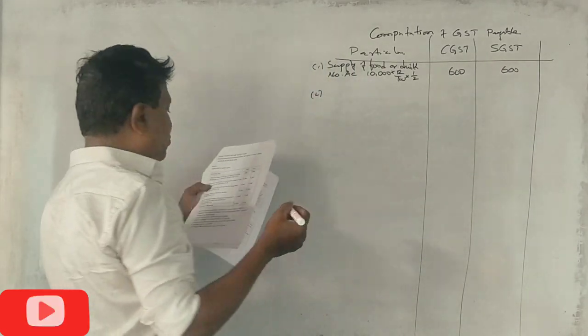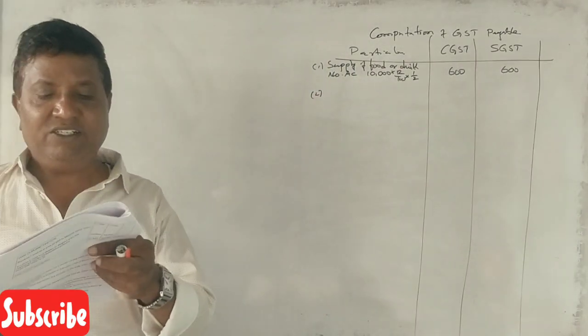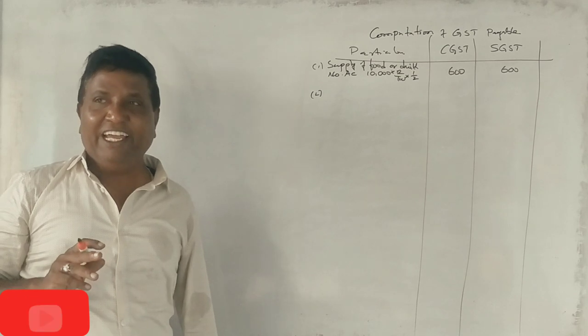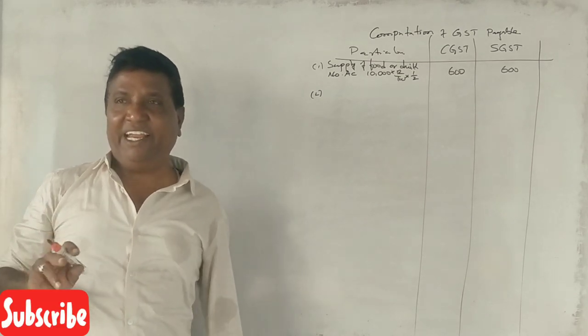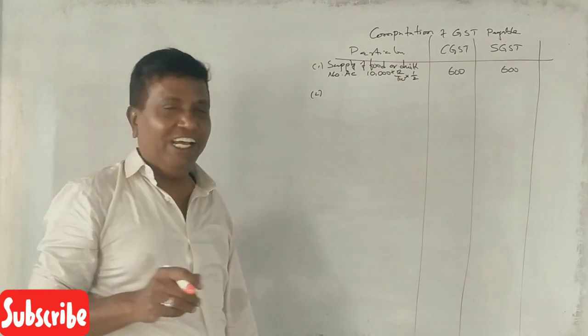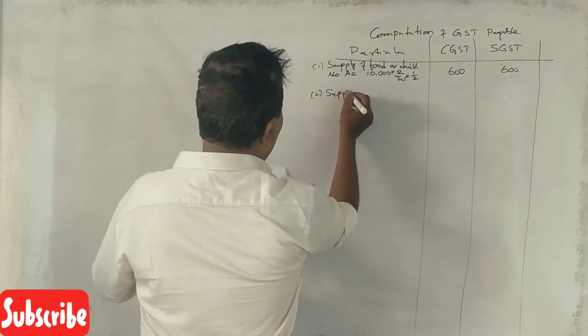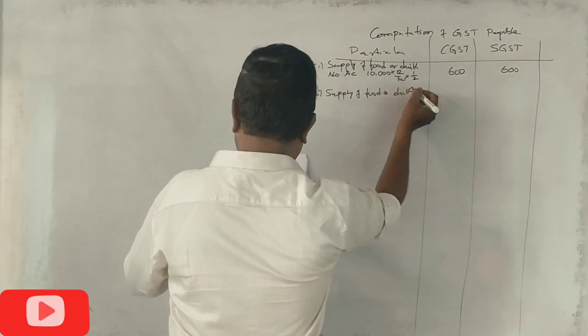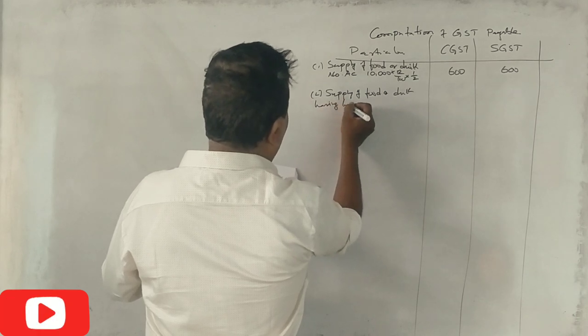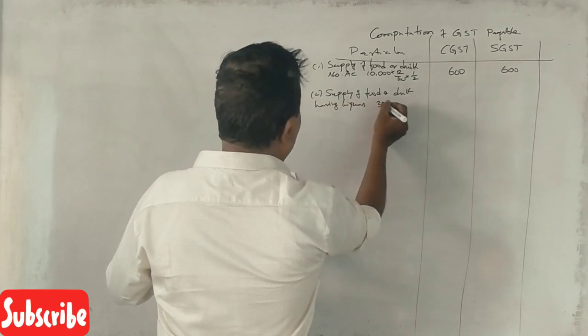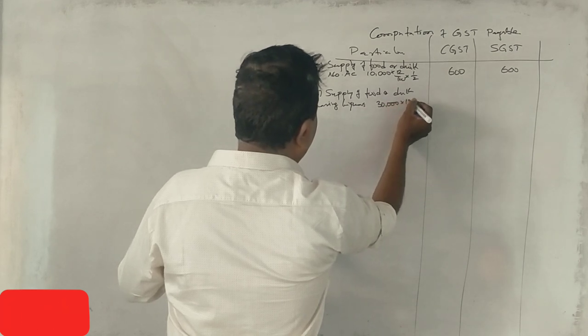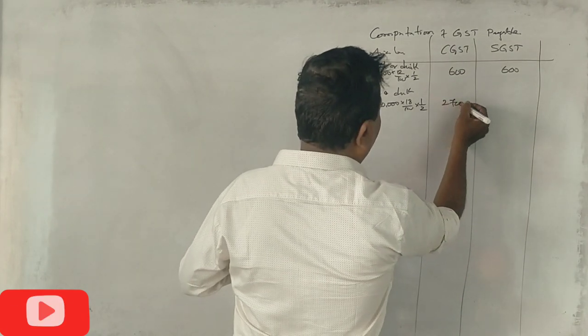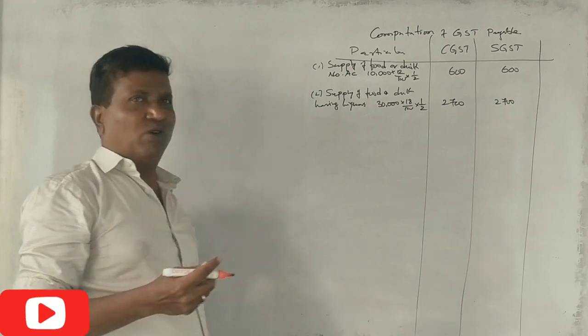Supply of food drink restaurant having license for liquor with AC. Rate of GST 12 percent. Supply of food and drink having liquors. 1000, 18 percent GST, 12 one by two, 2700, 2700.